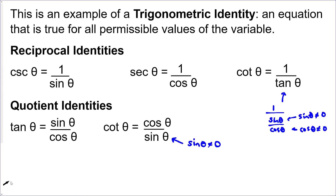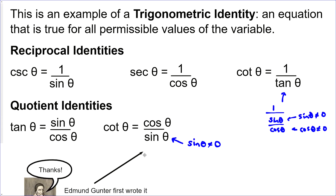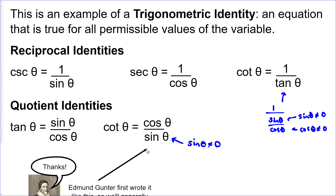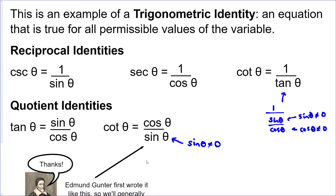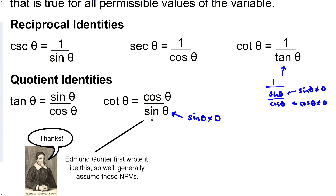It turns out the guy who first invented cotangent theta as a function was Edmund Gunther, and he wrote it like this. So generally, we'll assume these non-permissible values.